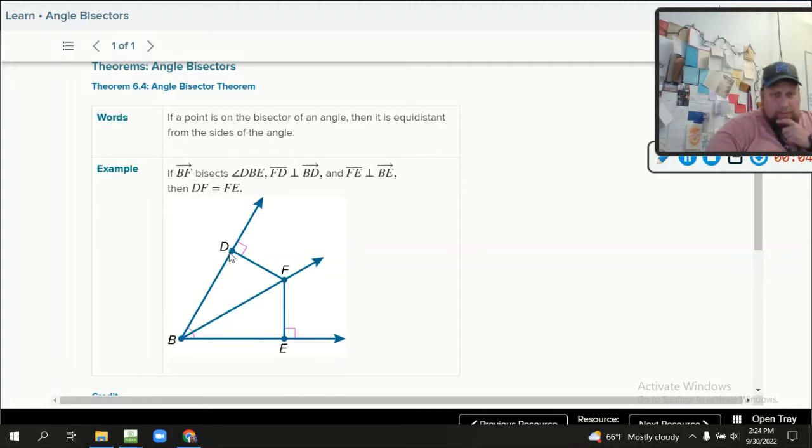So this line BF bisects the angle, right? And if there's a point on there, then it is equal distance from the sides of the angle. This one says if BF bisects angle DBE, then DF equals EF. So basically these two lines right here and here are the same. Go ahead and pause this, write it down.